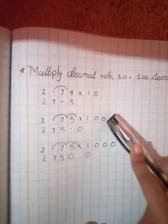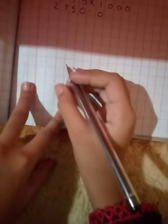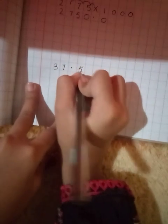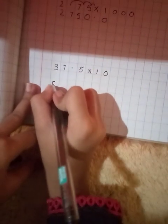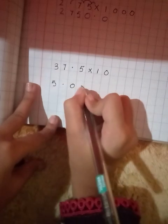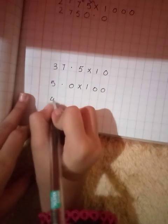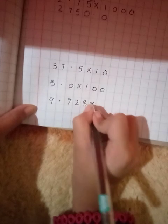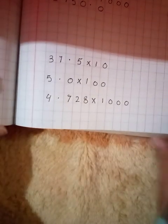So guys, I'm going to give you three equations of 10, 100, and 1000. Now you have to solve them at home and give me answers in the comments. First question is 37.5 multiplied by 10, second is 5.0 multiplied by 100, and third is 4.728 multiplied by 1000. Now you have to give me answers in comments. Bye bye!